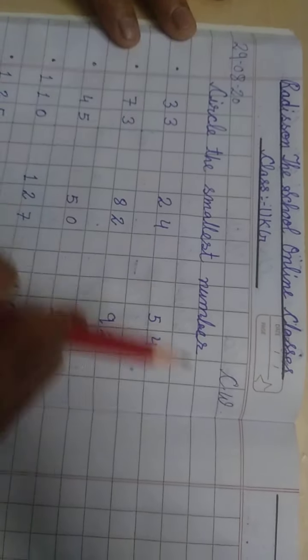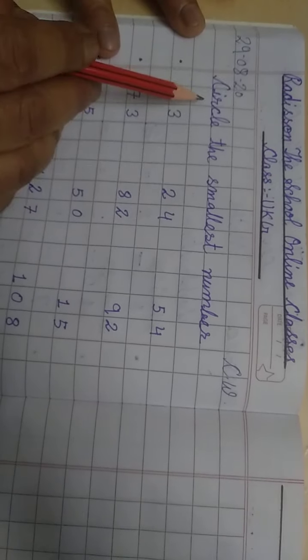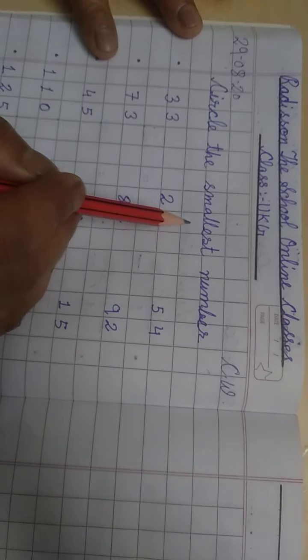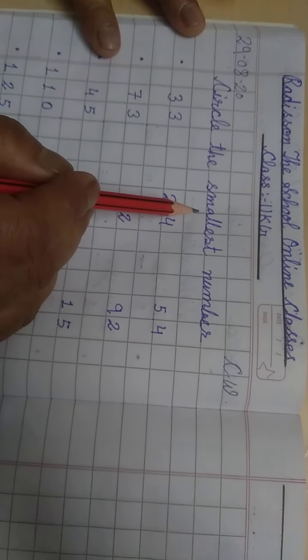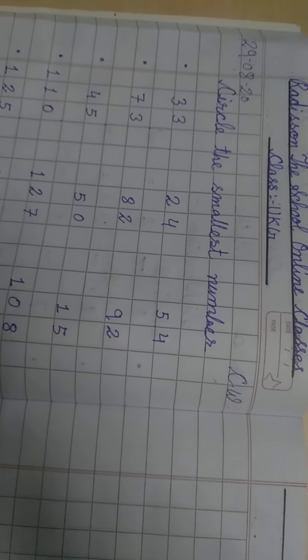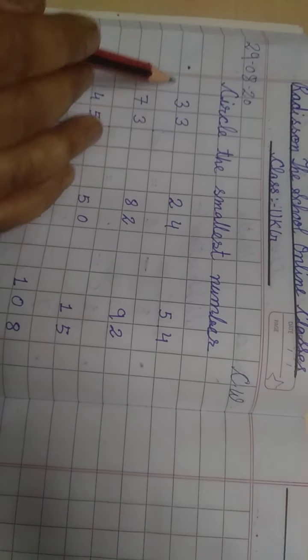Next worksheet is, first of all you write the date and CW and then circle the smallest number. Smallest मतलब क्या है? सबसे छोटा number क्या है? Okay?